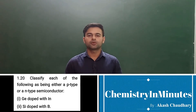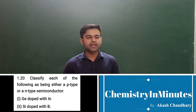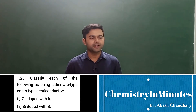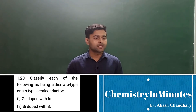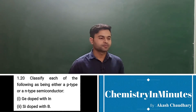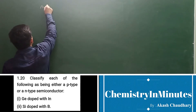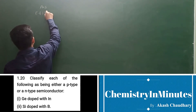Hello my dear friends, the question now appearing on your screen is exercise question 1.20. The question is: classify each of the following as being either a p-type or an n-type semiconductor. First is germanium doped with indium, and second is silicon doped with boron. Let's write the answer to exercise question 1.20.